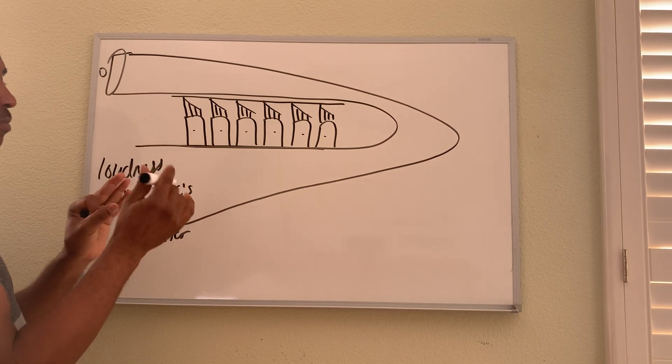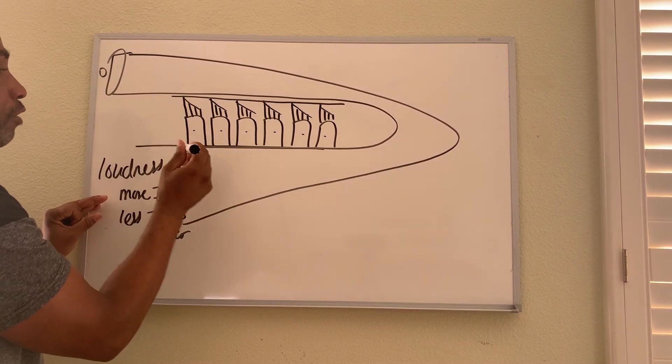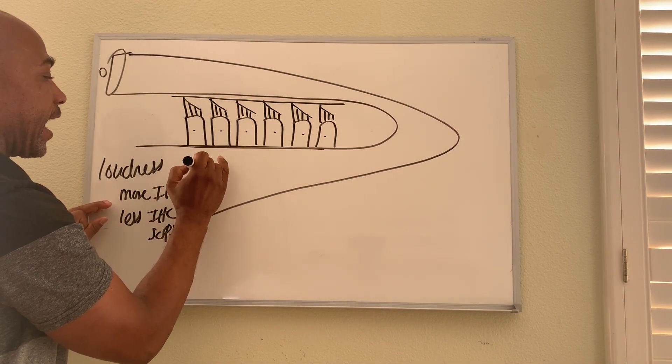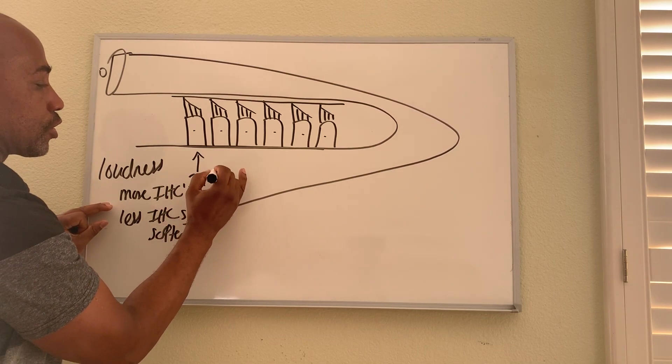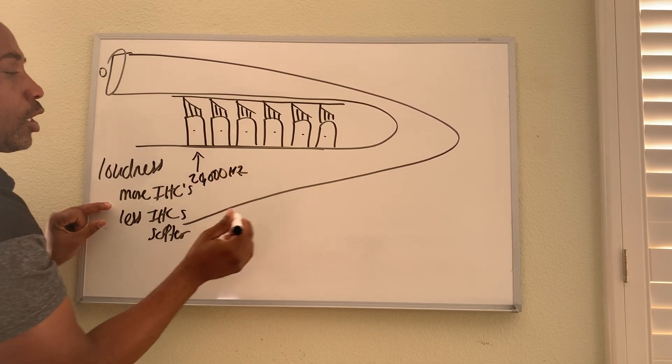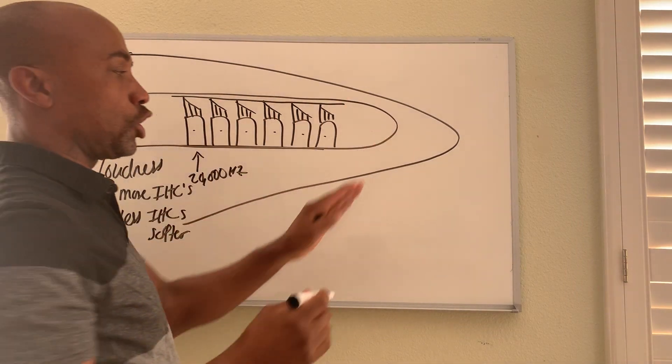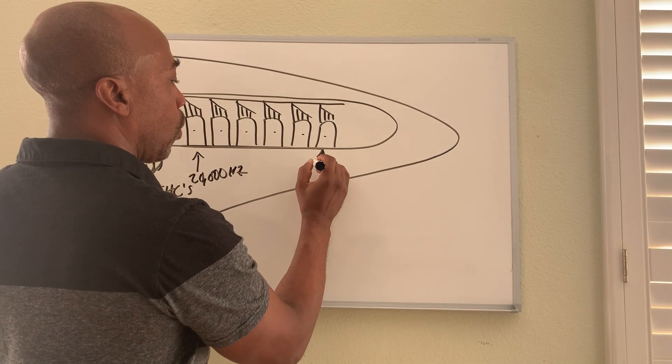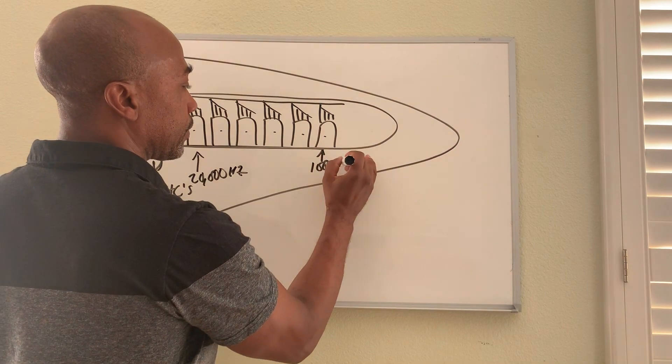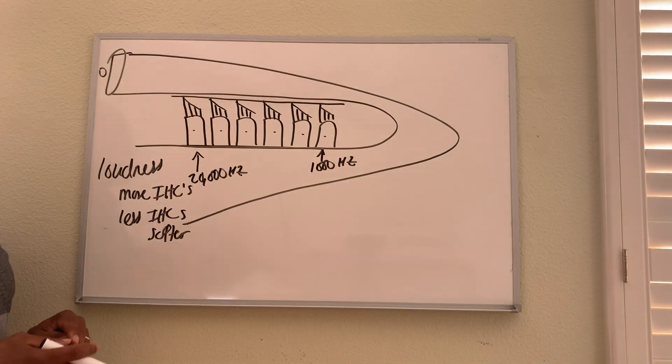So in the cochlea, each cell is responsive to a different frequency. At this end towards the base you have your high frequency sound, so maybe 20,000 hertz will be here. All the way down at the other end you start to get lower frequency, so maybe here this could be 1,000 hertz.